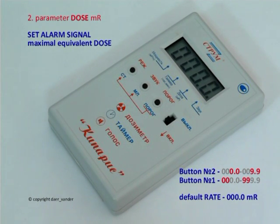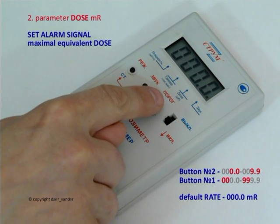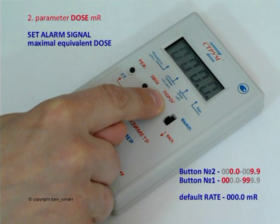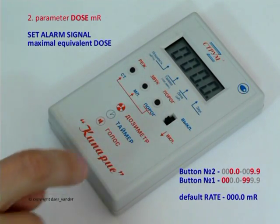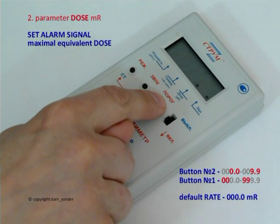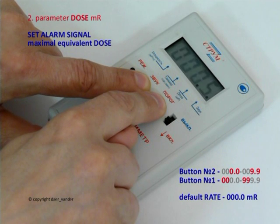Setting up the alarm signal threshold for maximum dose: the alarm signal will switch on after exceeding the specified threshold. You can manually set this maximum value. While pressing and holding button number 3, digits will be blinking and you will see the value 000.0 Mg. To change the threshold, press and hold button number 3, then press button number 2.